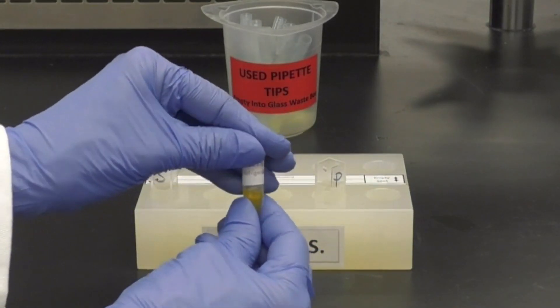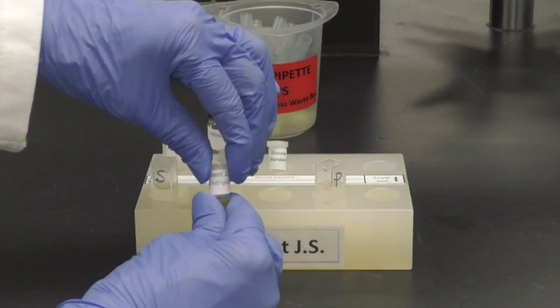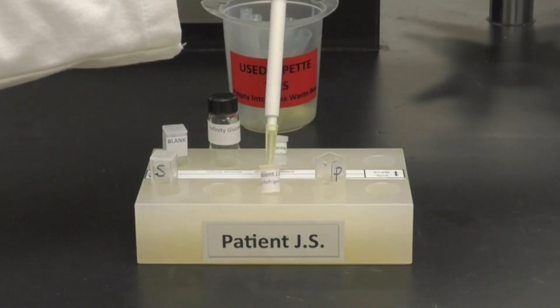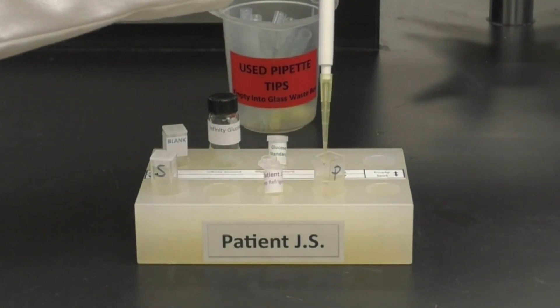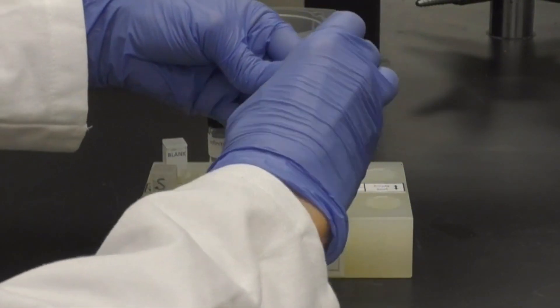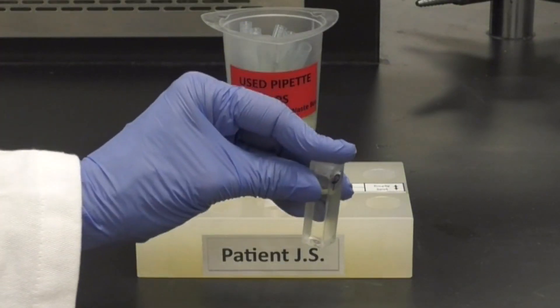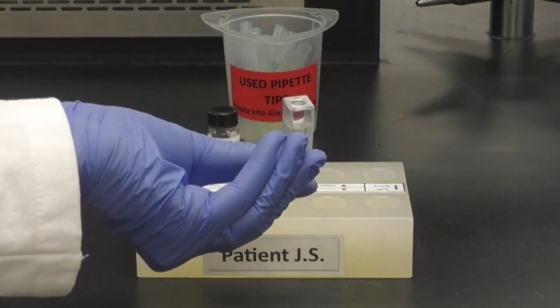After 2 or 3 minutes, you can prepare the patient's cuvette by micropipetting 20 microliters of the patient sample into the remaining cuvette, capping it and rotating to mix. Allow it to set for 5 minutes also.